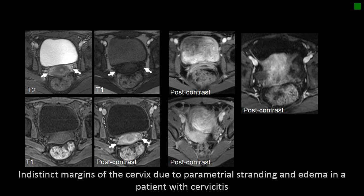Let's talk about this ascending infection. One of the first things that can be impacted is the cervix. When PID is causing cervical inflammation, we refer to that as cervicitis. With cervicitis, oftentimes the imaging findings are going to be very subtle or non-existent. All you're really going to see is maybe a little bit of parametrial stranding or edema around the cervix that makes the margins of the cervix and the vaginal fornices indistinct.